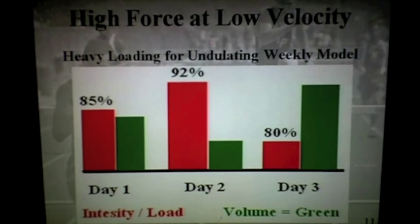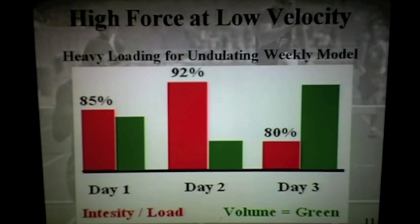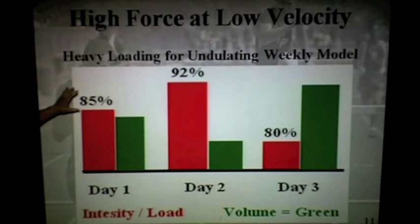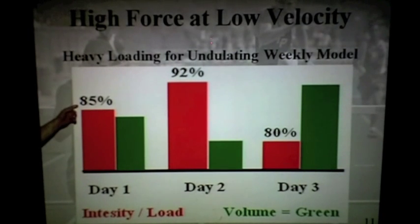The key concept here is high force at high or low velocity. An engineering student pointed out that 82 percent on the force curve is force at low velocity — and it clicked. This is what I call high loads. This is the undulating heavy loading model during the week. At 85 percent, an athlete can do roughly four reps at max effort. If someone can back squat 300 pounds, they'll do 255 for four.